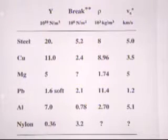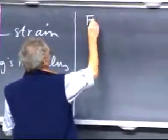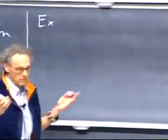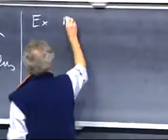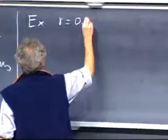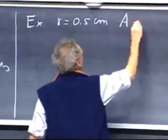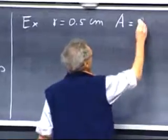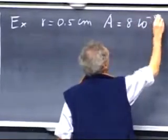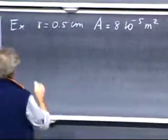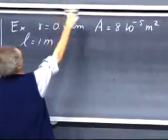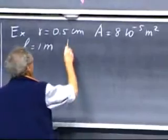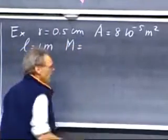We could first do a simple example just to get a feeling for what is at stake here. I can take a rod with a radius r, which is 0.5 centimeters. That would give me a cross-sectional area of eight times ten to the minus five square meters. So a thick rod. I make it very simple. I make the length one meter and I hang on the rod at the bottom a mass m, which is 500 kilograms.